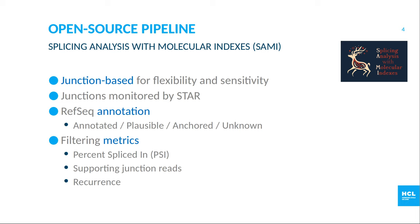For each junction, we collect various metrics: the percent spliced in (PSI) — the proportion of reads supporting this junction rather than other junctions starting at the same site — the amount of reads supporting the junction, the recurrence, and so on.